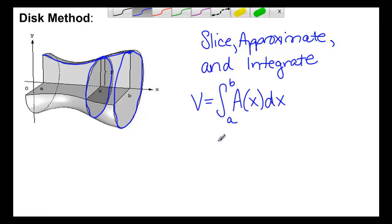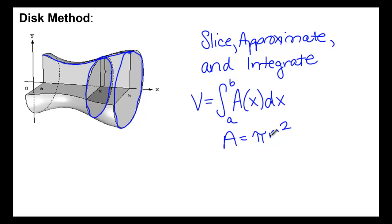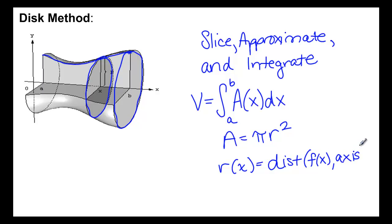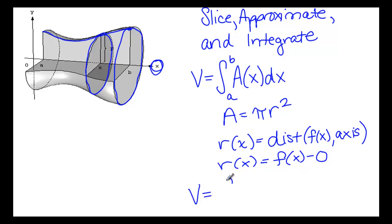So, using the method we did before, we said that we needed to find the area. We know area is pi times radius squared. We're slicing perpendicular to the x-axis, so we need to find the radius in terms of x. In the disk method, this is always going to be the distance from the function to the axis. So in this particular case, that looks like f(x) minus 0, because it's revolving around the axis y equals 0. We can put this all together and say that the volume is going to be the integral from a to b of pi times f(x) squared dx.